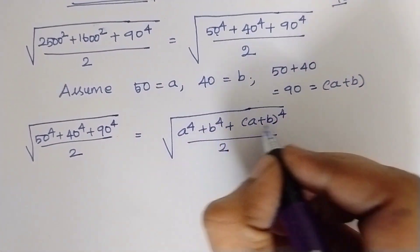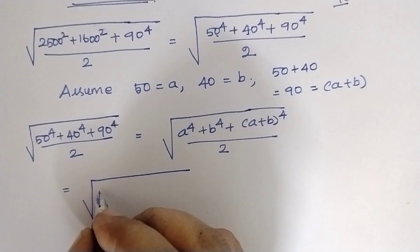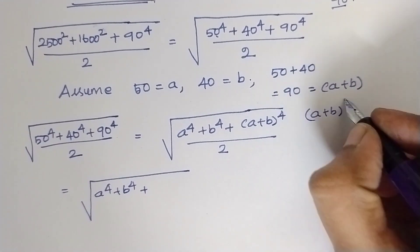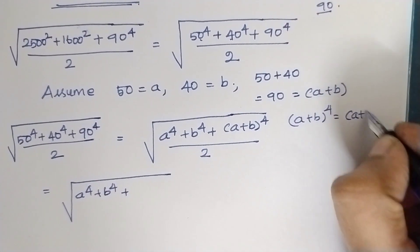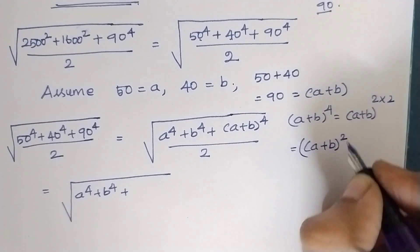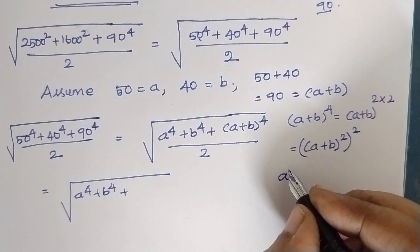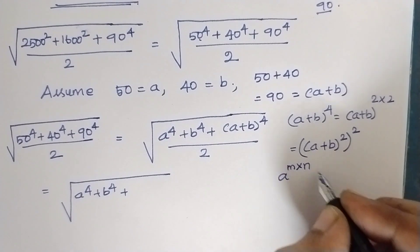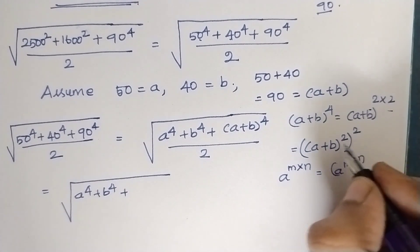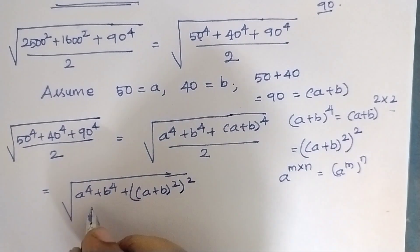Now I am going to change (A plus B) to the power 4. This can be written as (A plus B) squared, the whole square, using the formula: A to the power (M times N) equals A to the power M, the whole power N. So (A plus B) to the power 4 becomes (A plus B) squared, that to the square. Substituting, the expression becomes the square root of A to the power 4, plus B to the power 4, plus (A plus B) squared the whole square, divided by 2.